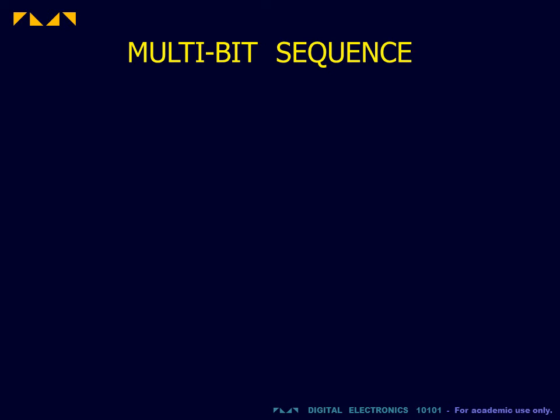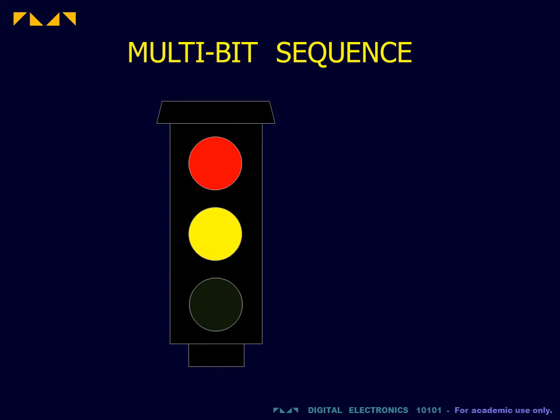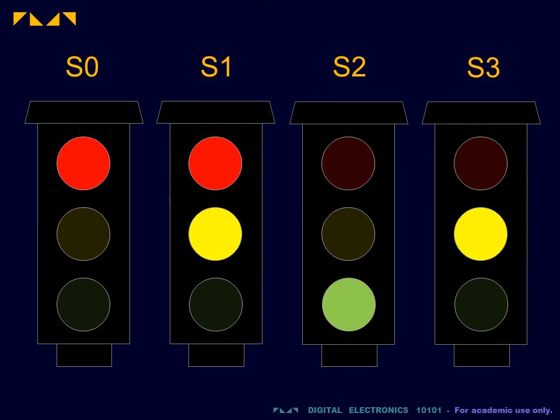It is easy to adapt this idea to more complicated multi-bit outputs. Suppose we wish to design a traffic light with the following repeating sequence: red, red-yellow, green, and yellow. This is a 4-state sequence.